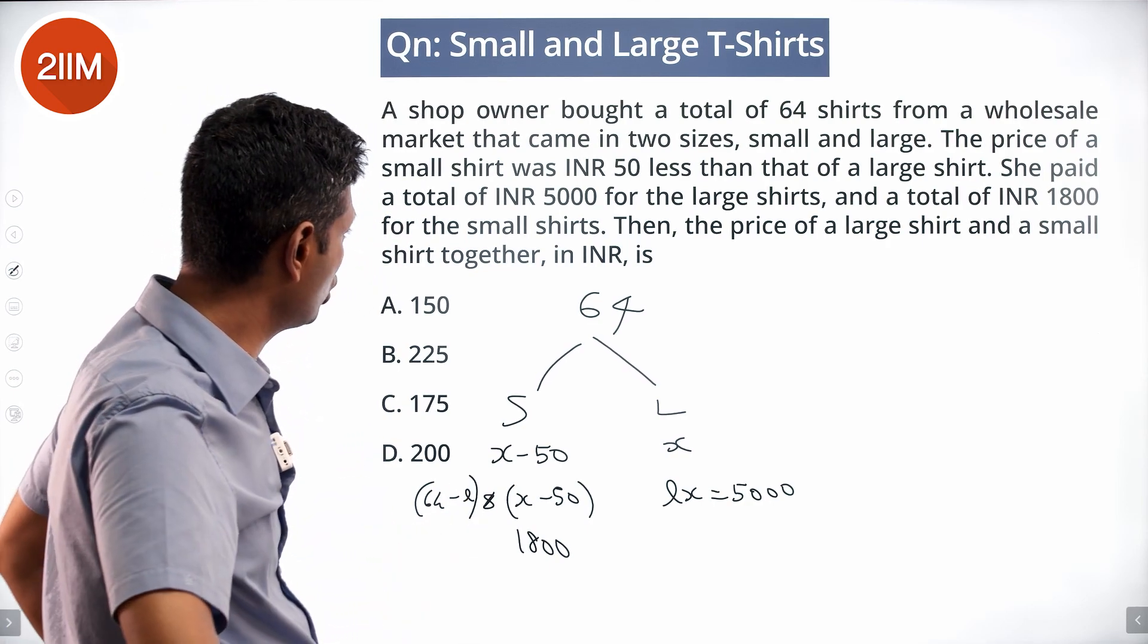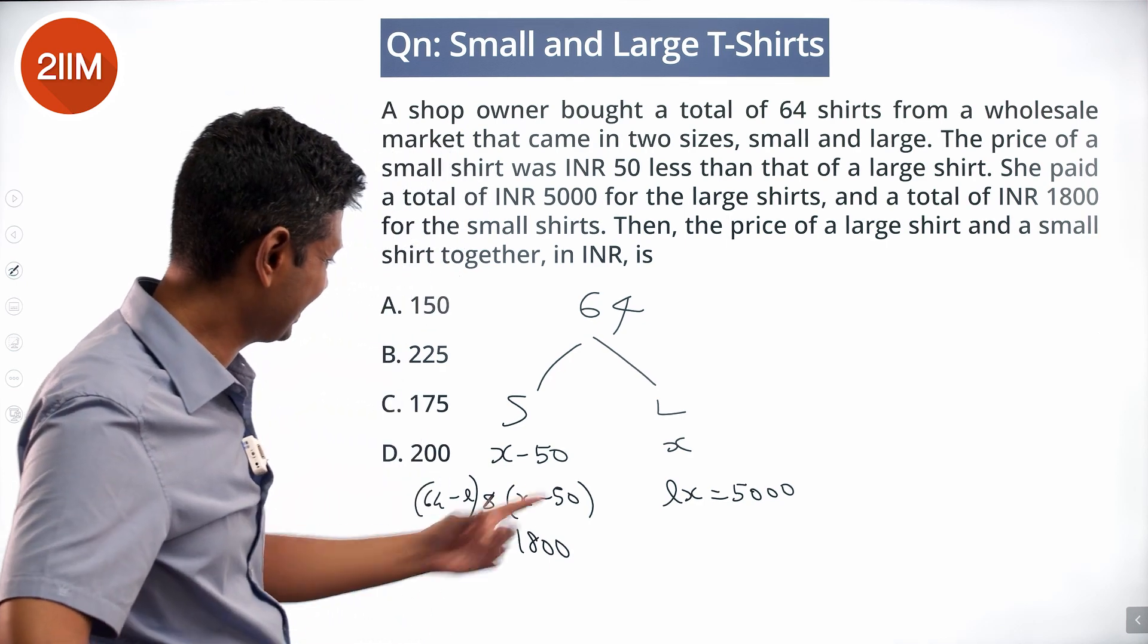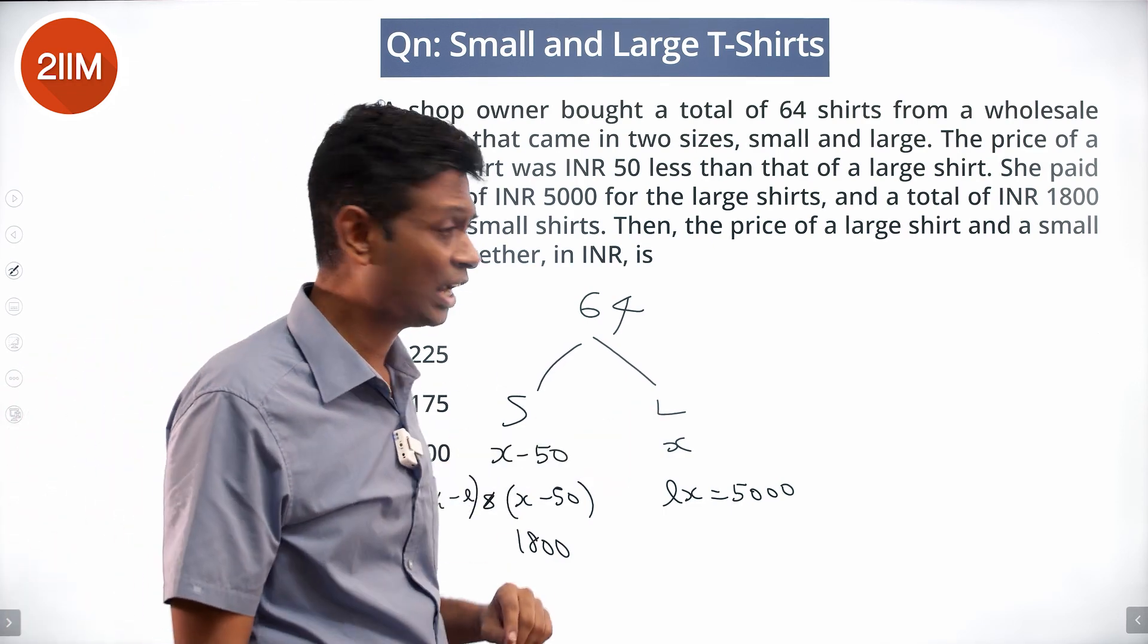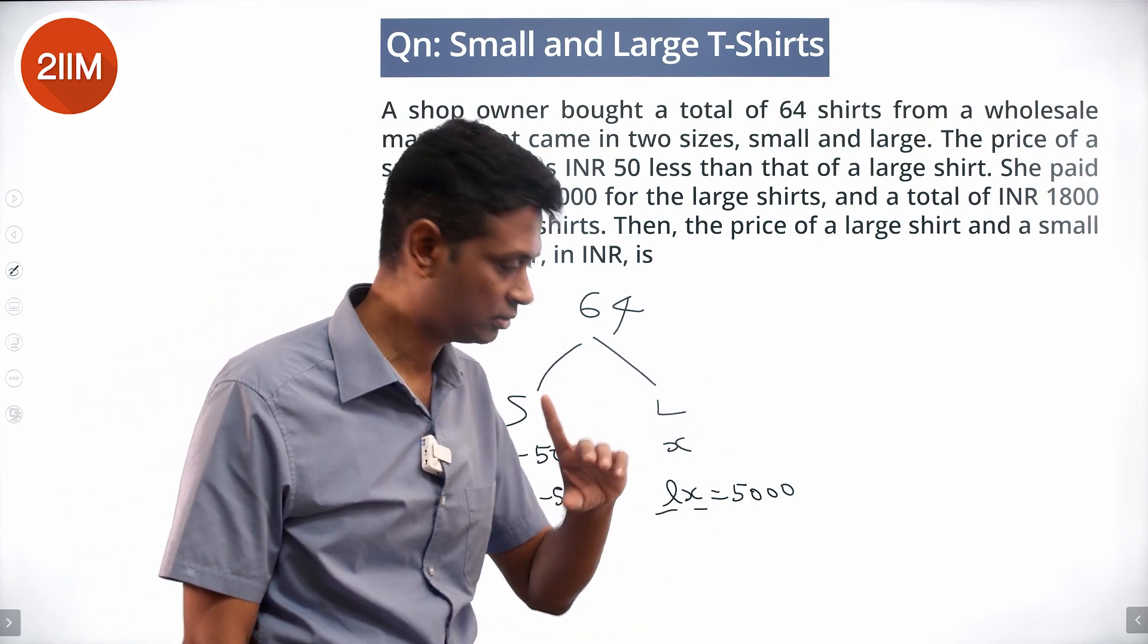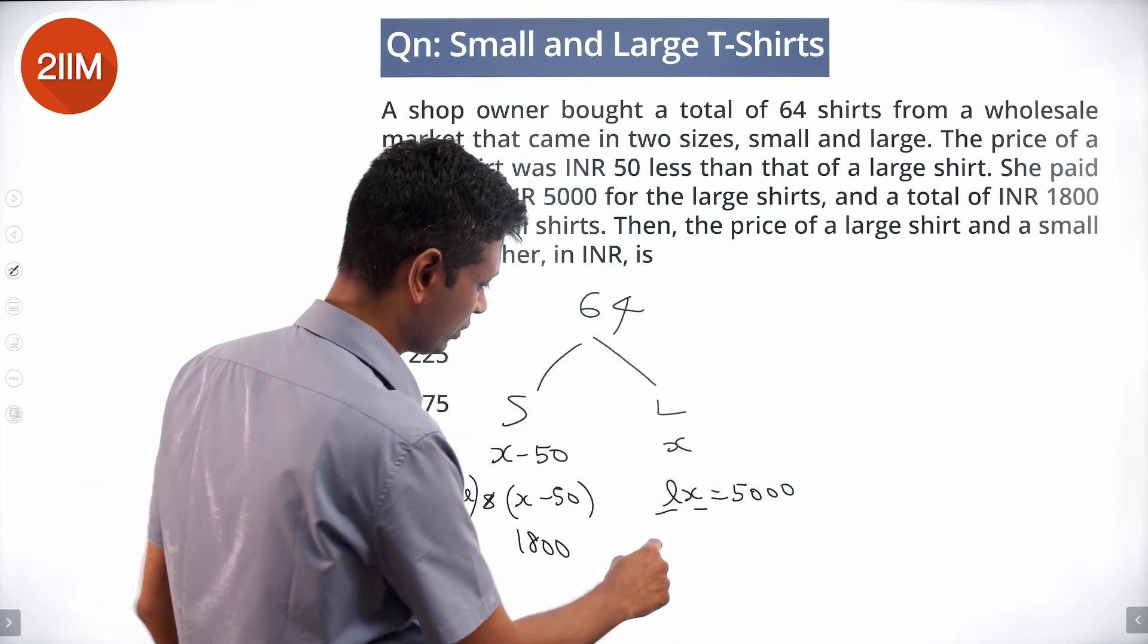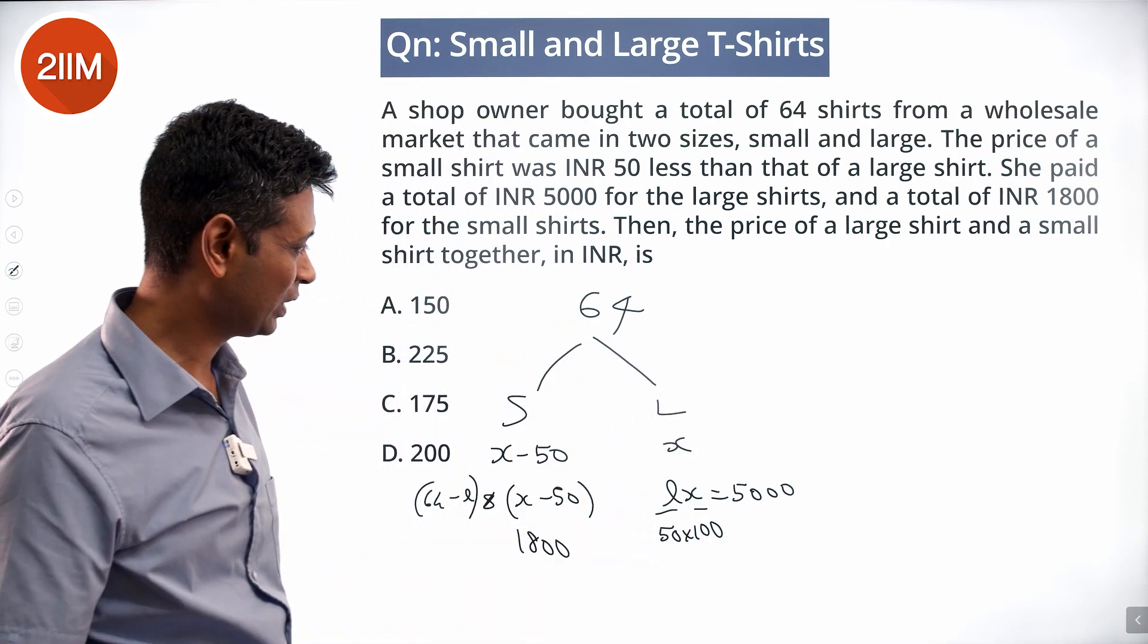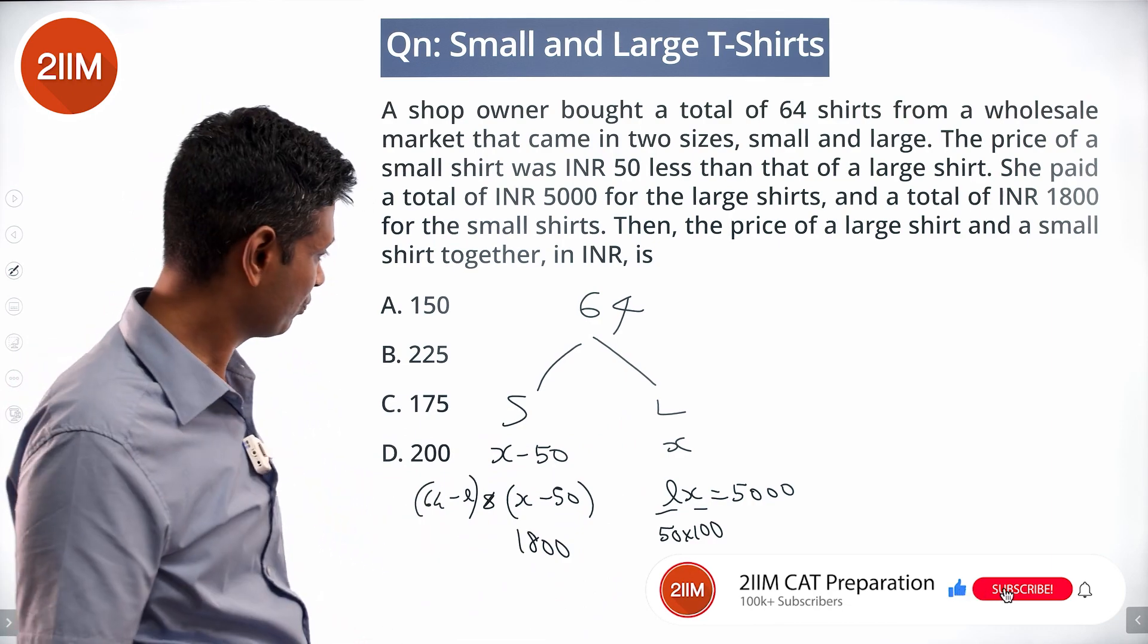The price of a large shirt and a small shirt together in INR. The X number should be more than 50, the L, the number of large shirts, should be less than 64. Multiplying those two to get 5000, so it could be 50 into 100, something like this. We're factorizing 5000. L should be an integer, X also likely an integer.